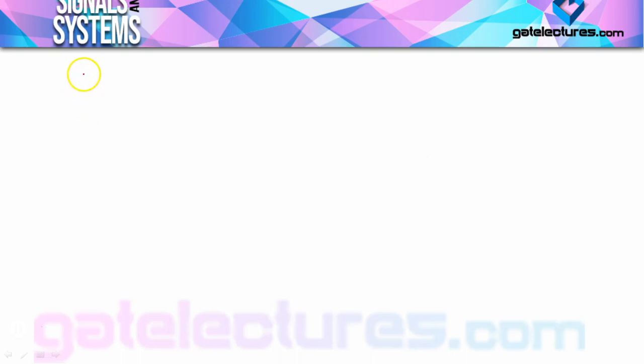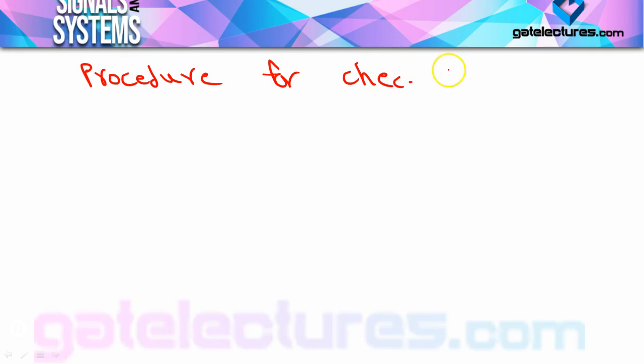Main point कहाँ पर आता है? जब एक से ज़्यादा sine, cosine, या Euler signals आपस में add, subtract होते हैं, या किसी भी equation में एक से ज़्यादा signals given होते हैं, तो वो periodic है कि नहीं — इसके लिए एक important procedure होता है: procedure for checking periodicity of the signal। जब एक से ज़्यादा sine, cosine, या Euler signals single equation में given हों, तो क्या वो periodic होंगे कि नहीं, यह हम calculate कर पाएंगे।